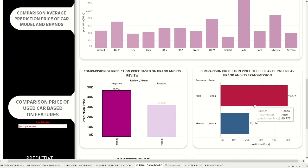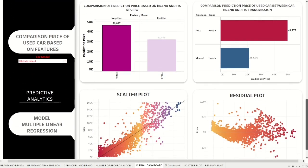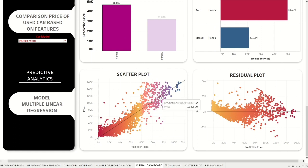This user interface also visualizes the result model used in multiple linear regression. In the scatter plot, it shows the result with low variance and low bias. This project also analyzes a residual plot to expose whether the model has bias or not. The result of the residual plot shows that the values are scattered very close to zero with no pattern.